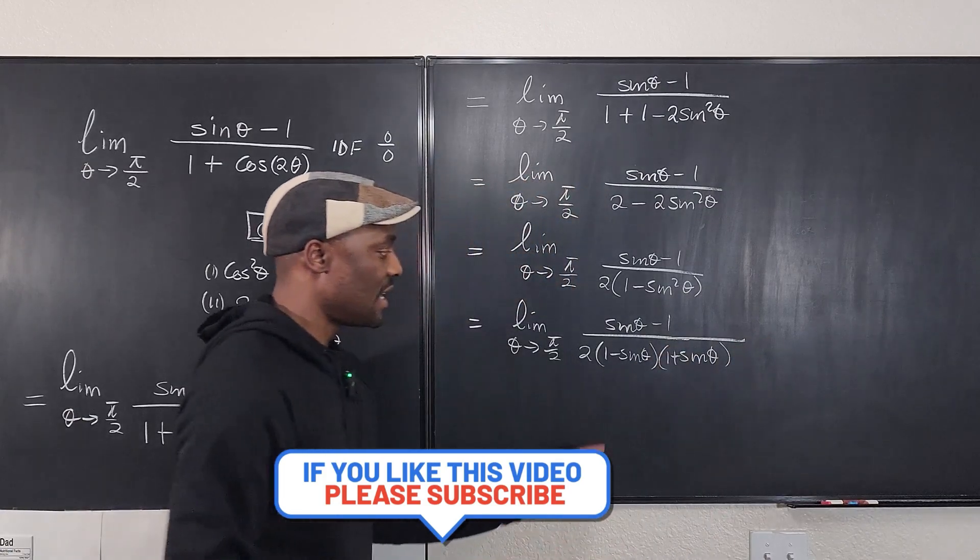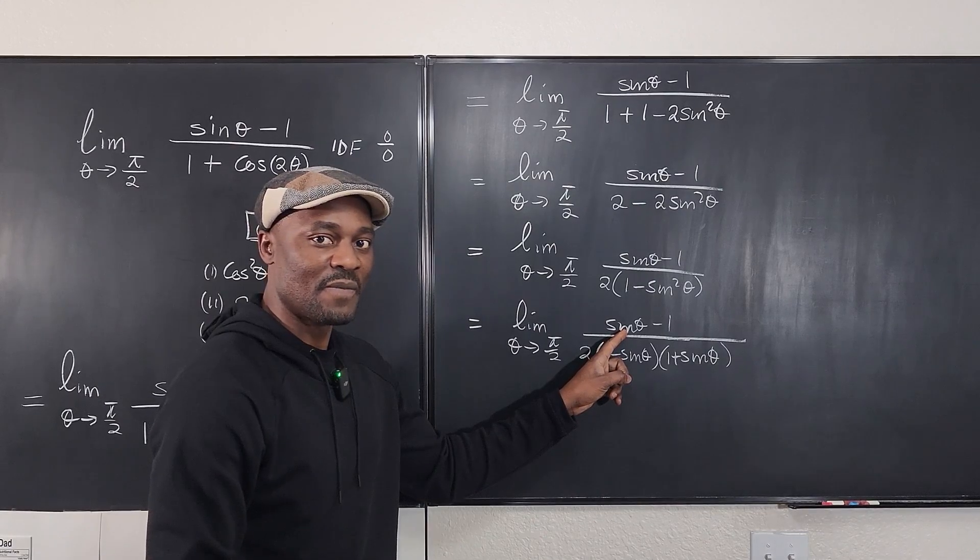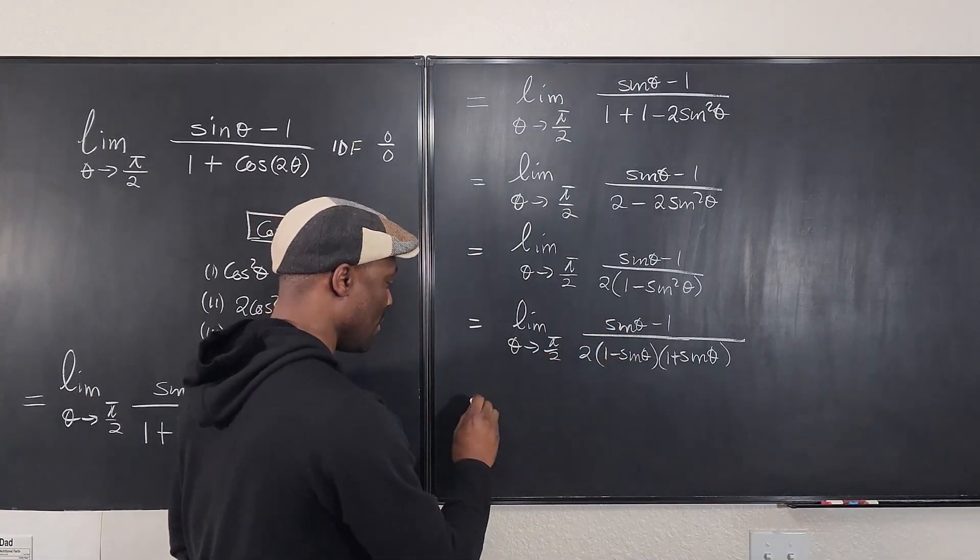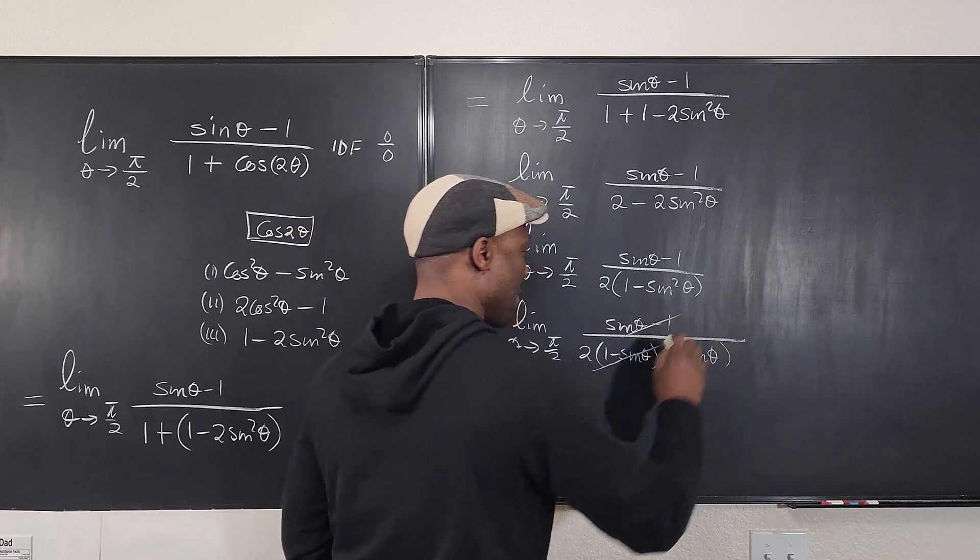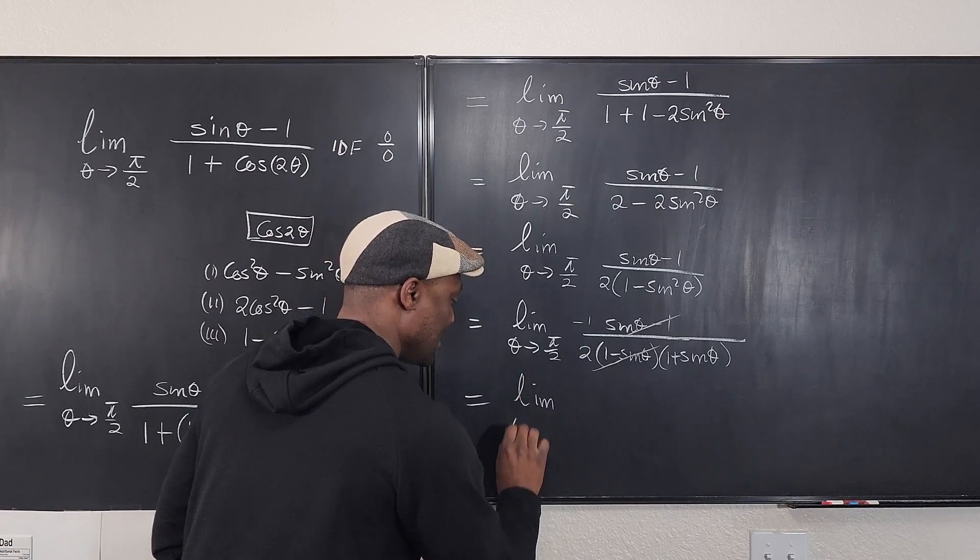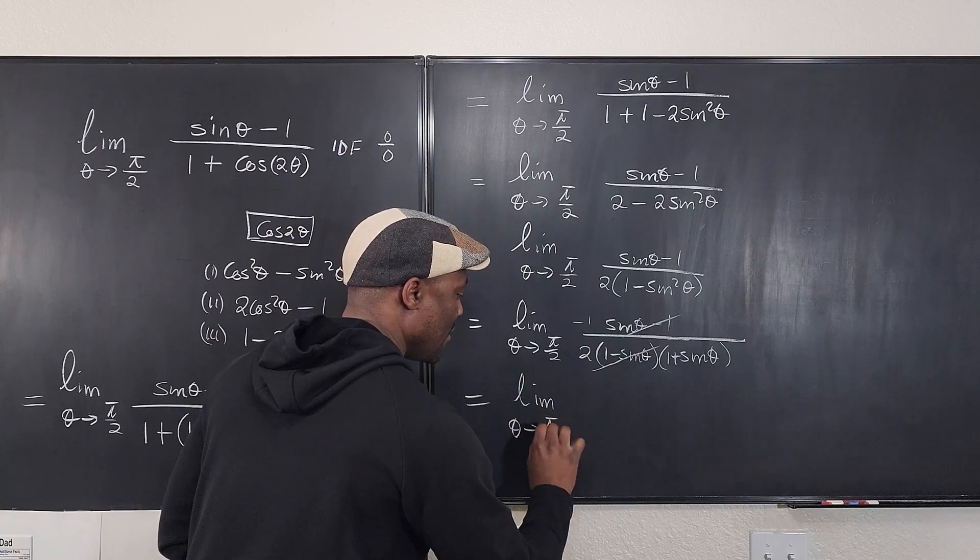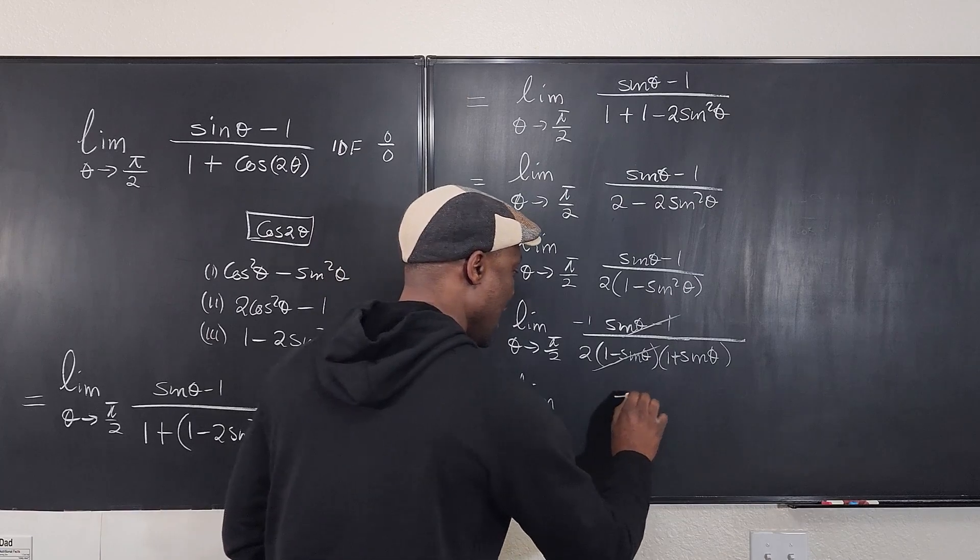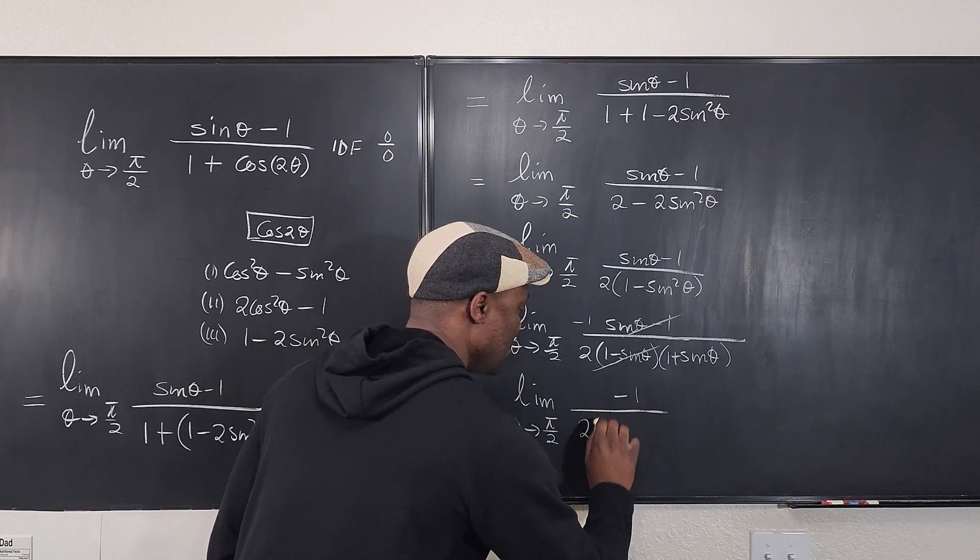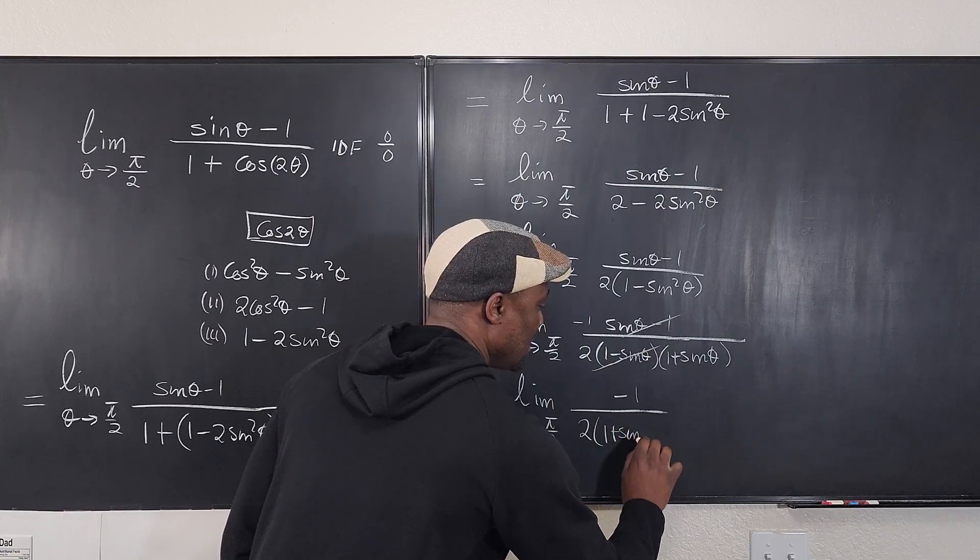And obviously, this will cancel this out, and you're going to get negative 1 because the positions are switched. So if I cancel this out, I'm going to get negative 1. So this is the limit as θ goes to π/2 of negative 1 over 2 times 1 plus sinθ.